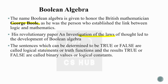The sentences which can be determined to be true or false are called logical statements or truth functions. A logical statement is a sentence that is either true or false. The results — true or false — are called binary values or logical constants.